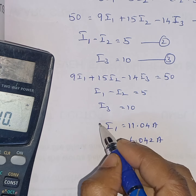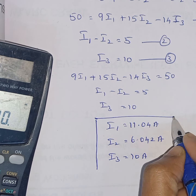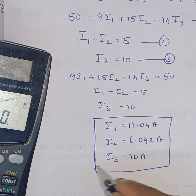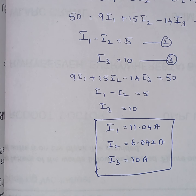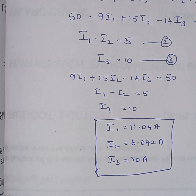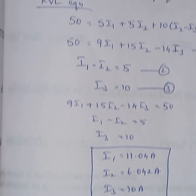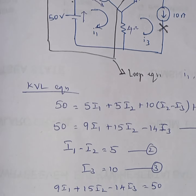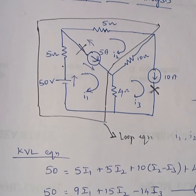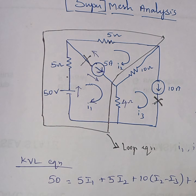Very simple. The I1 and I2 values are obtained through super mesh analysis, where all current sources in the circuit are handled using the constraint equations.